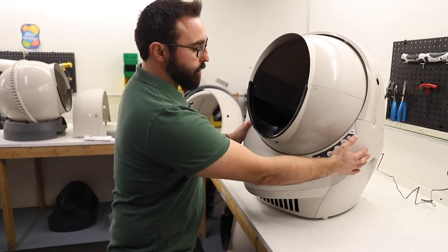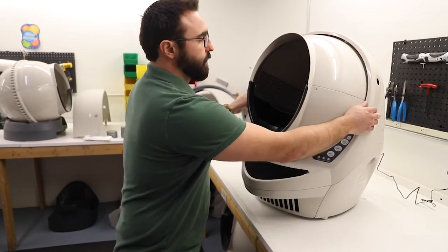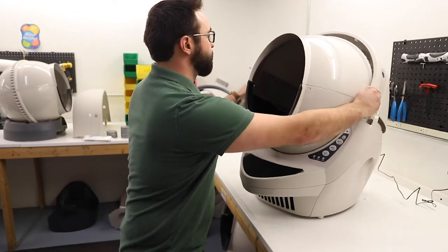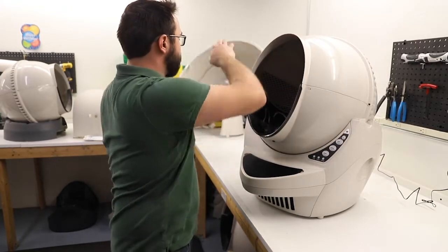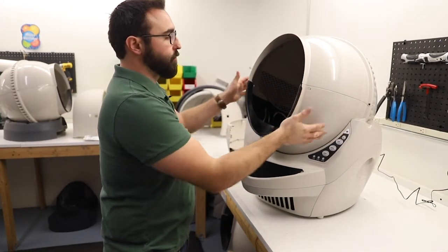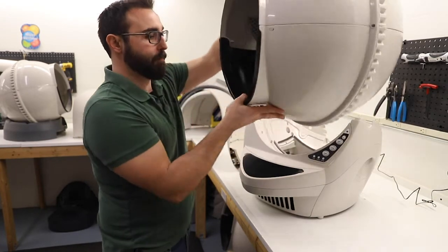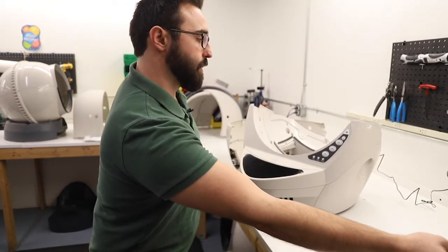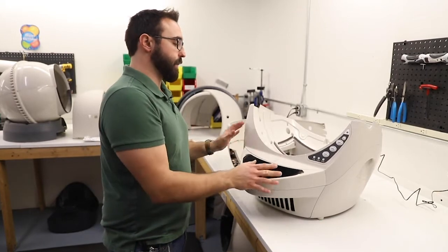So for starters, I'm going to power off the unit and remove the bonnet. Next, I'm going to remove my globe, and now we have access to the full base.